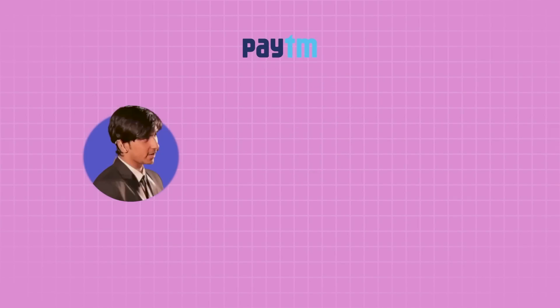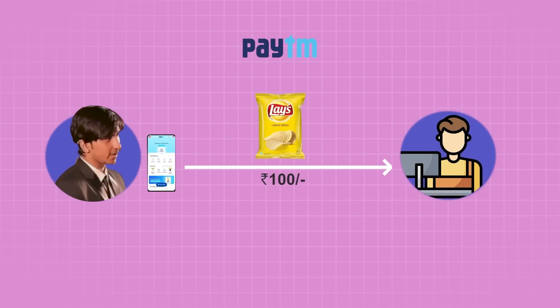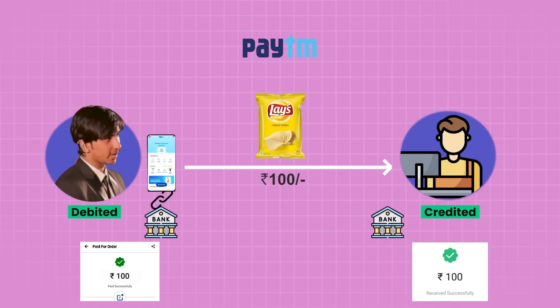If you look at the system from the consumer perspective, it's very similar. But from the banking standpoint, it's completely different. For example, let's take the case of Paytm. When I buy chips and I pay 100 rupees via Paytm, my payment wallet is linked to my bank account. So this money will be debited from my bank account and credited to the shop owner's bank account. On the front end, I get a notification saying 100 rupees has been sent, and the shopkeeper gets a notification saying money has been received.